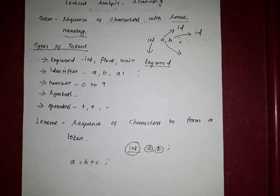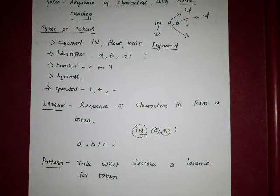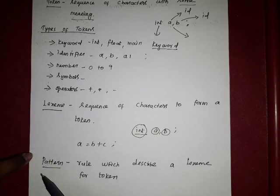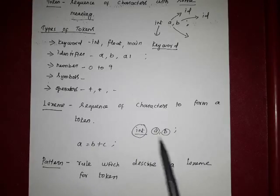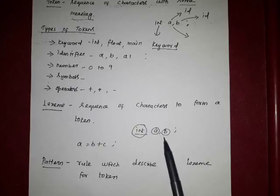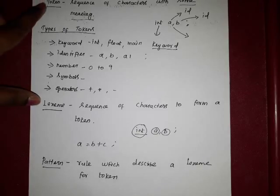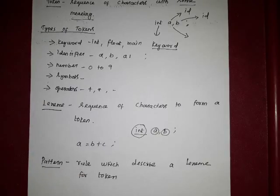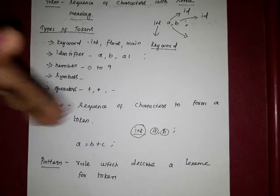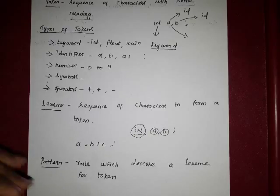What is a pattern? A pattern is a rule which describes a lexeme for a token. We identify a lexeme by using some rules. For example, considering 'integer a, b': the characters are grouped by spaces, symbols, operators, and other delimiters to form a token. The rules define what is an identifier, what is a keyword, what are numbers, symbols, and operators — these all come under the category of rules, which we call patterns.